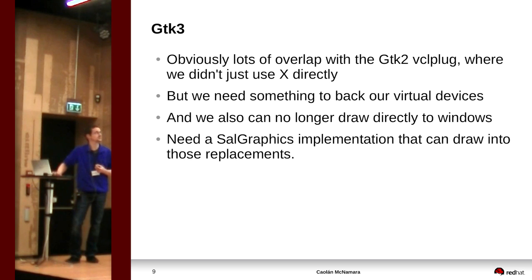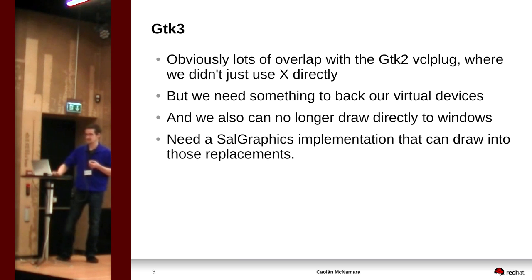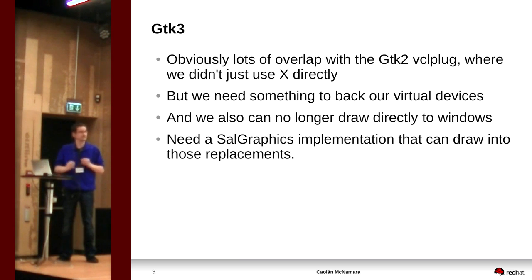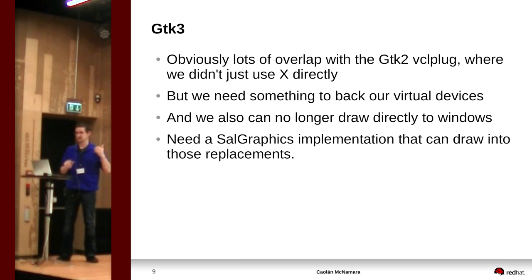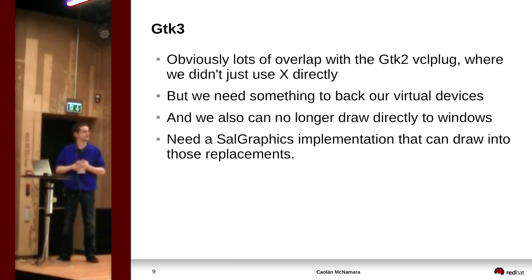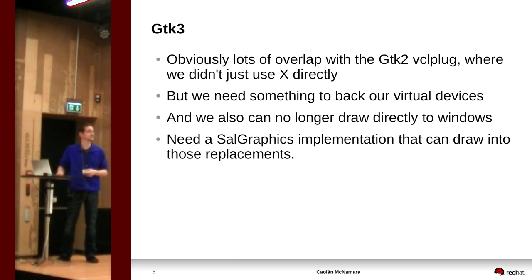That's pretty much how the GTK2 one is put together. And we have problems when we go to do GTK3. There's lots of overlap with GTK2 code of course, in places where we're not doing anything directly with X. But we have the problem that we have nothing to back the virtual devices we mentioned earlier. Earlier we were backing them with X pixmaps. But if we're going to use GTK3, we want to use GTK3 for the future for Wayland support, where you don't have X11 behind you.